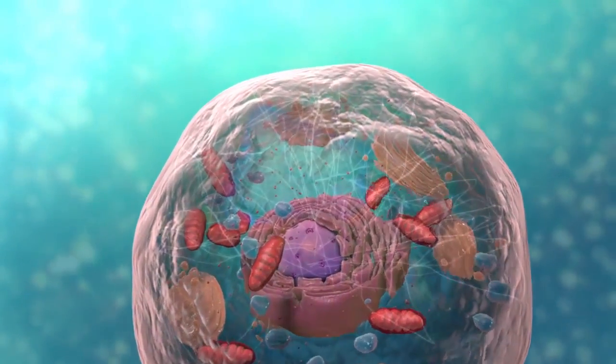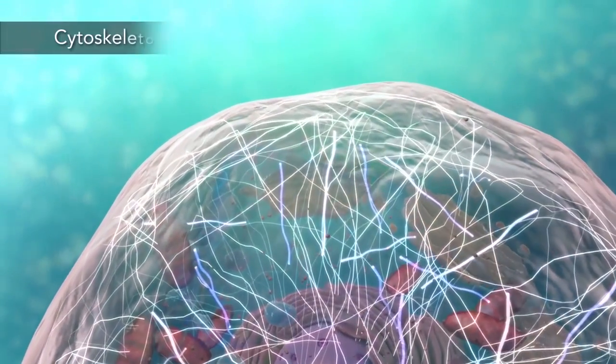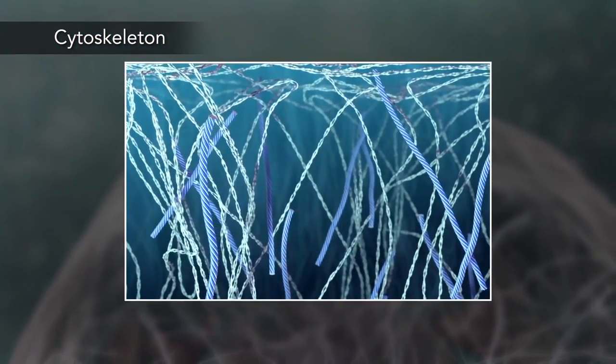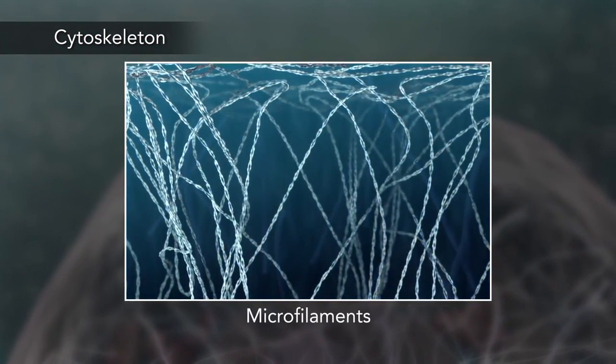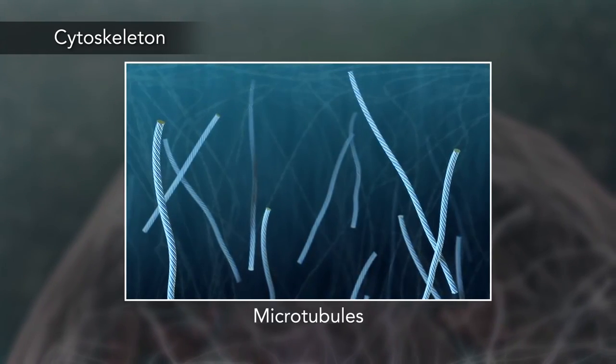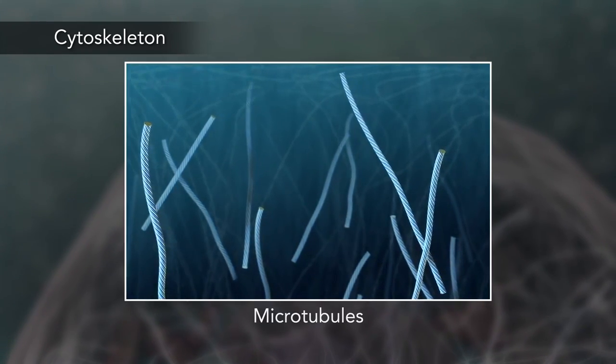Meanwhile, the cell maintains its shape through a cytoskeleton. The cytoskeleton includes the thread-like microfilaments, which are made of protein, and microtubules, which are thin, hollow tubes.